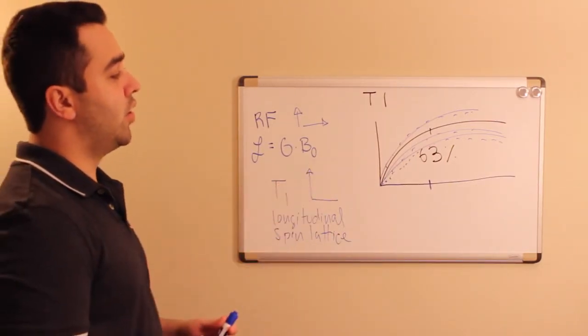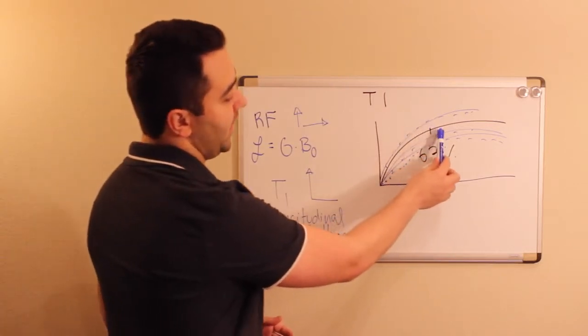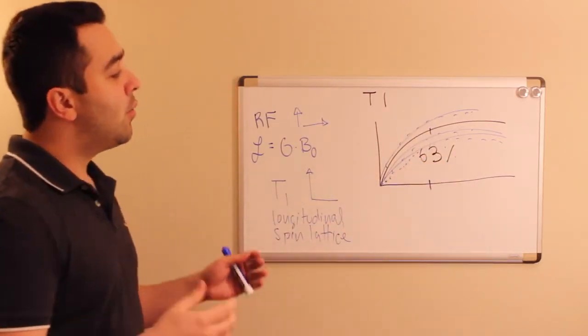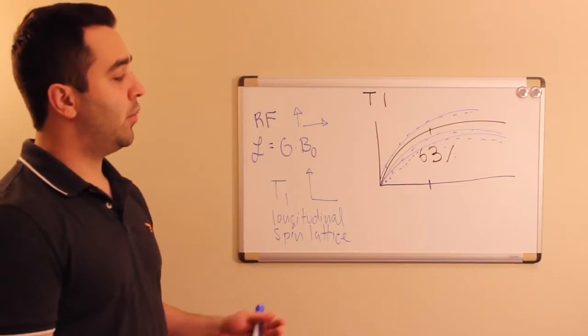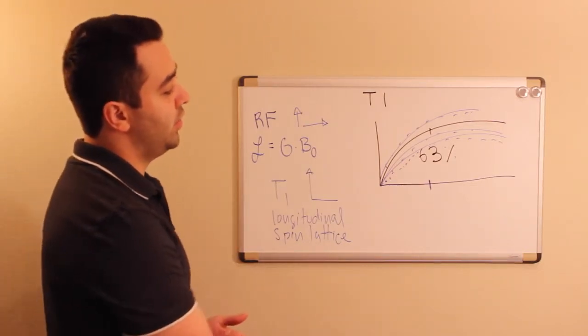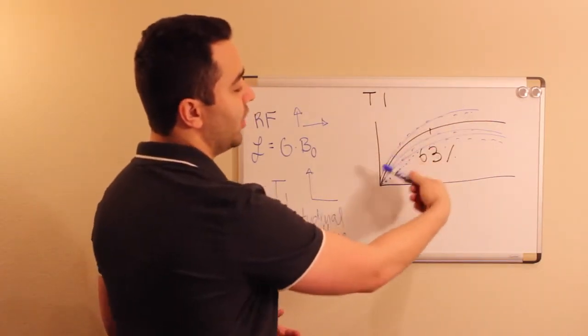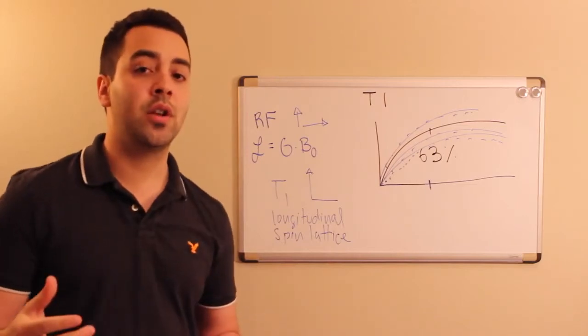The curve that you see here shows that 63% and that 63% will be representing only one tissue. In reality when we have these curves we should imagine that we have different curves because every tissue has its own T1.